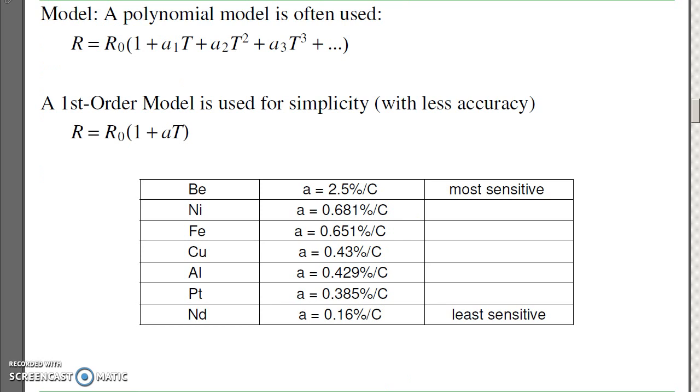To model a thermistor, usually we use a polynomial model. The more terms you add, the more accurate it is. A first-order model just uses a constant and is simply proportional to temperature. The constant depends upon the metal.